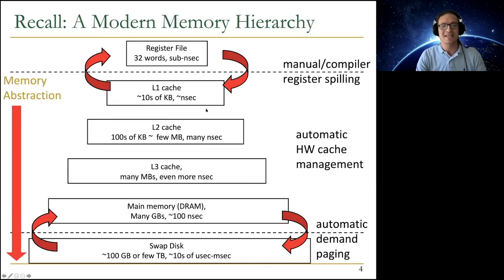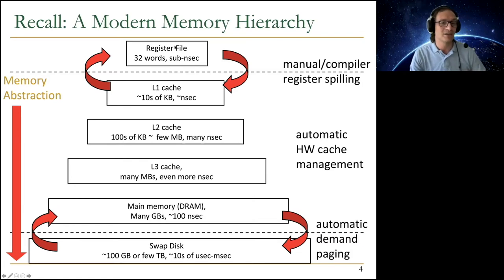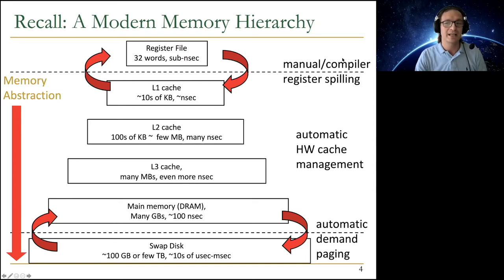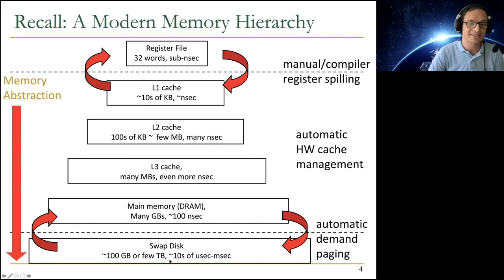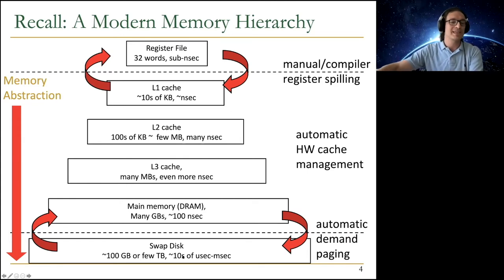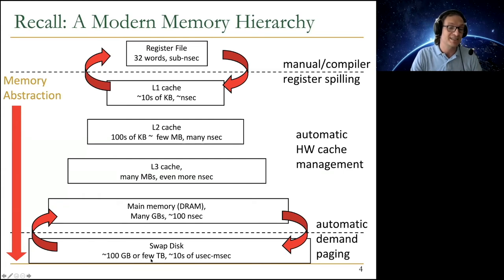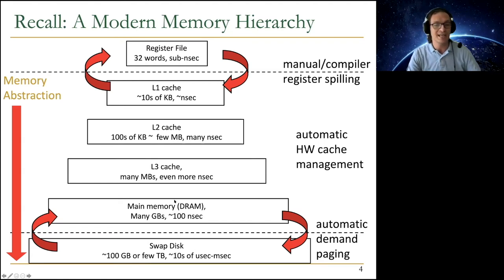This is another example of the modern memory hierarchy, expanded to cover the swap disk on the larger side and the register file on the faster side. The register file is managed by the compiler or programmer, not by hardware. The swap disk is managed automatically by the system — we'll talk about page faults when we cover virtual memory next lecture. You can think of main memory as a cache for the swap disk, which is a good way of thinking about it.